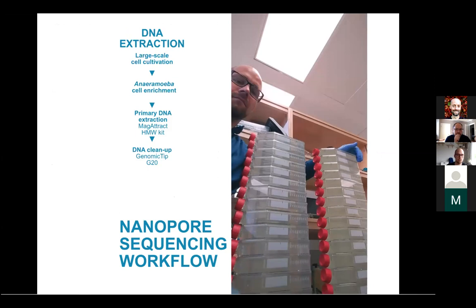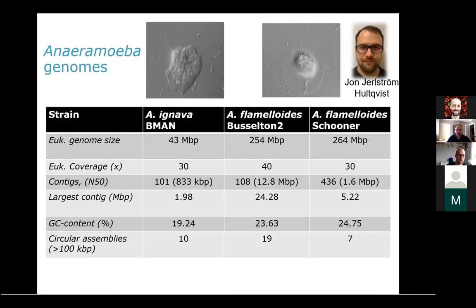Our next step was to get genome sequences for both the host organisms and the symbionts. We used our enrichment protocol to generate cell material, did DNA extraction, and performed nanopore sequencing. In total, we generated three genomes from two different species of aneroamoeba: from Aneroamoeba ignava, the strain Beemal, and from Aneroamoeba flamyloides, the strains Basaltone and Schooner. The genome sizes are quite different and they have relatively GC-poor genomes.